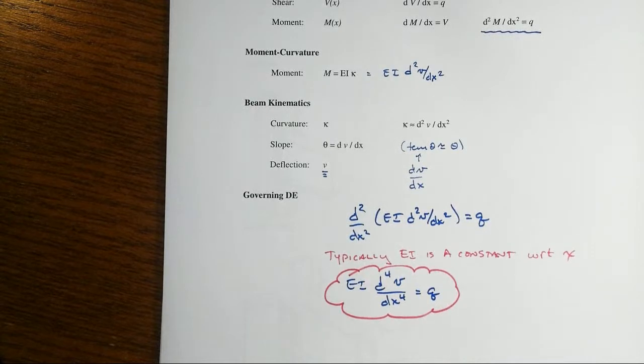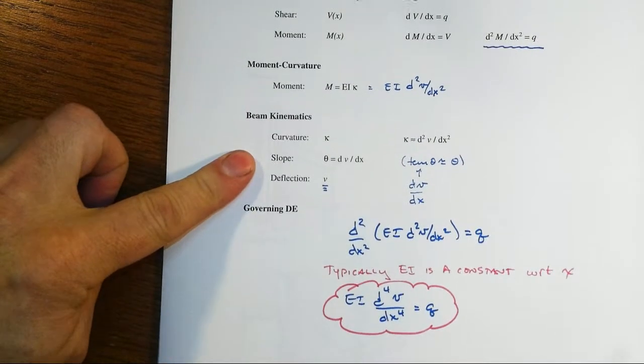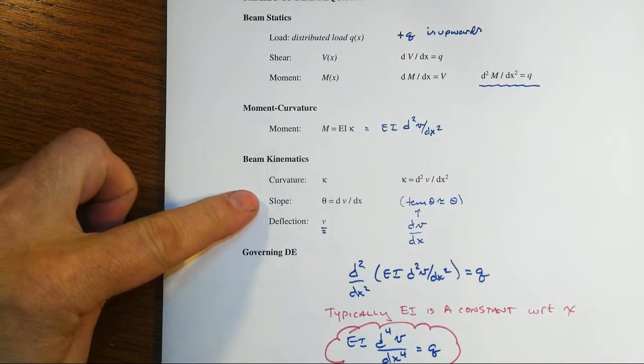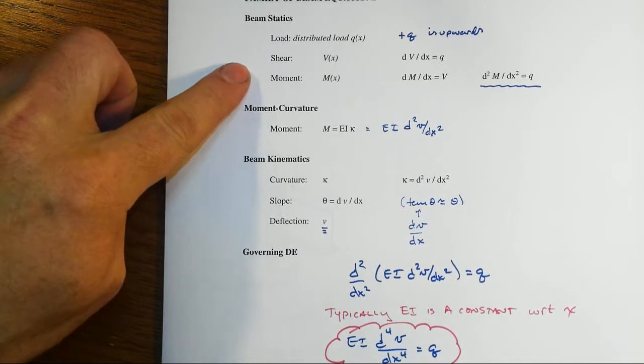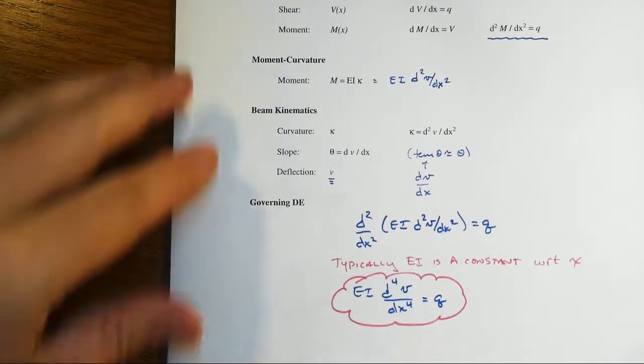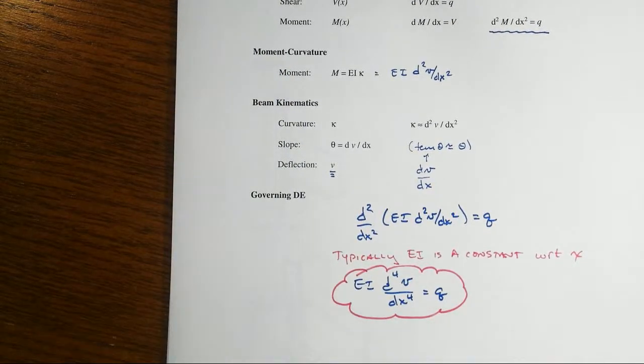Now, four derivatives, but note where four derivatives come from. Two of them from beam kinematics. That means things like displacement and slope or rotation. And then two of them associated with beam statics.